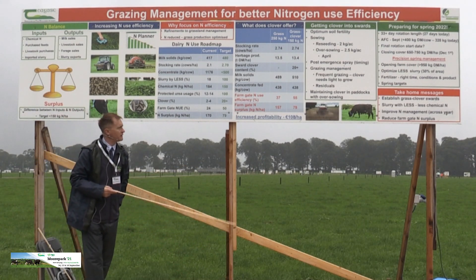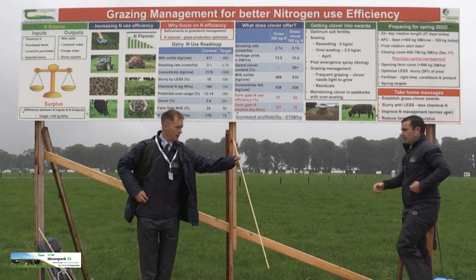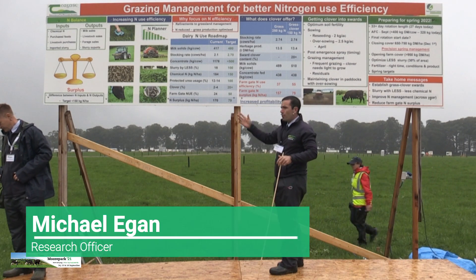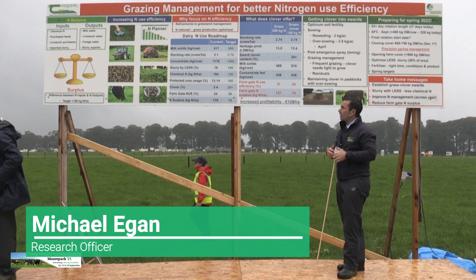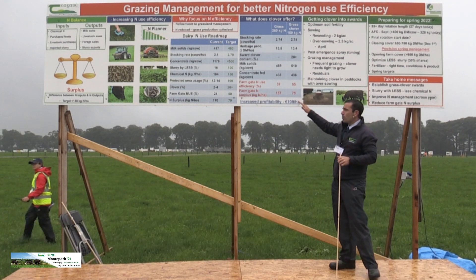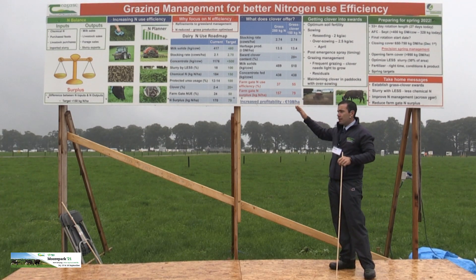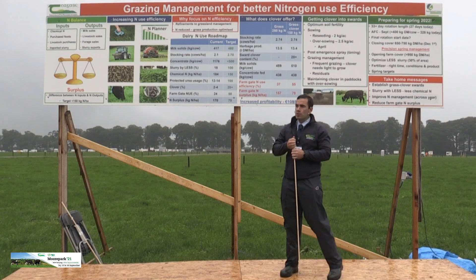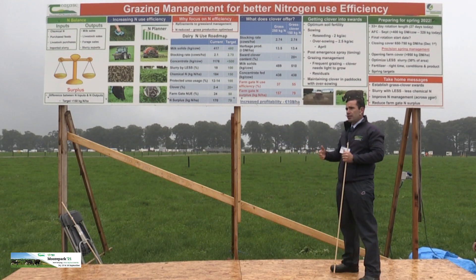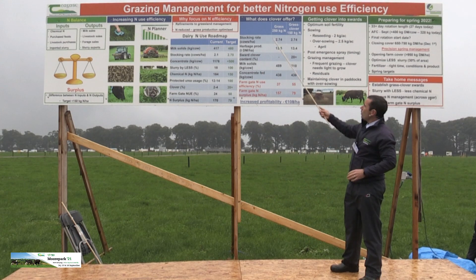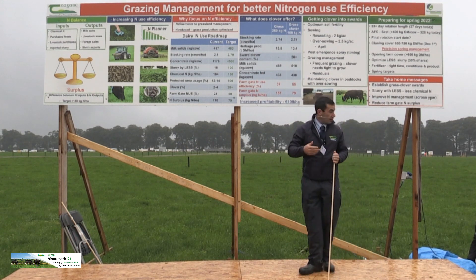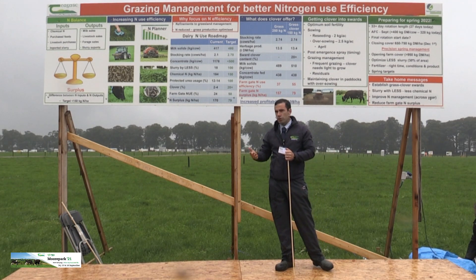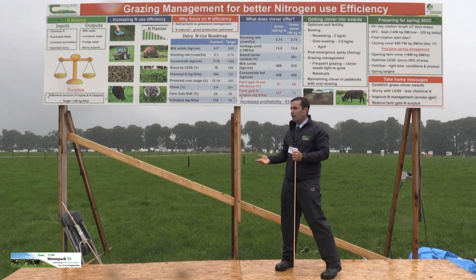Mike has gone through a lot of the information on how to increase nitrogen use efficiency, and one of the key things that has worked — with a lot of research done in Moorepark, Clonkeen, Hilty, and Solohead — is the role that white clover can play. How do we incorporate white clover into our swards and get the benefit from it? Clover offers mixed solids production, increased animal performance, and potential reductions in nitrogen fertilizer use.